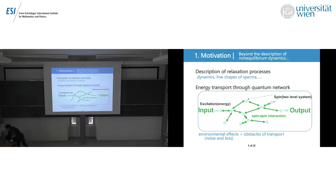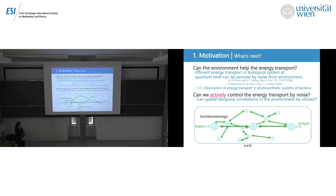To transport energy at the nanoscale, we consider that excitation from input to output — where the environmental effect is an obstacle — is common sense. But in some biological systems, the opposite is true. The biological system called the photosynthetic system in photosynthetic bacteria uses the environmental effect, so-called noise, to transport energy.